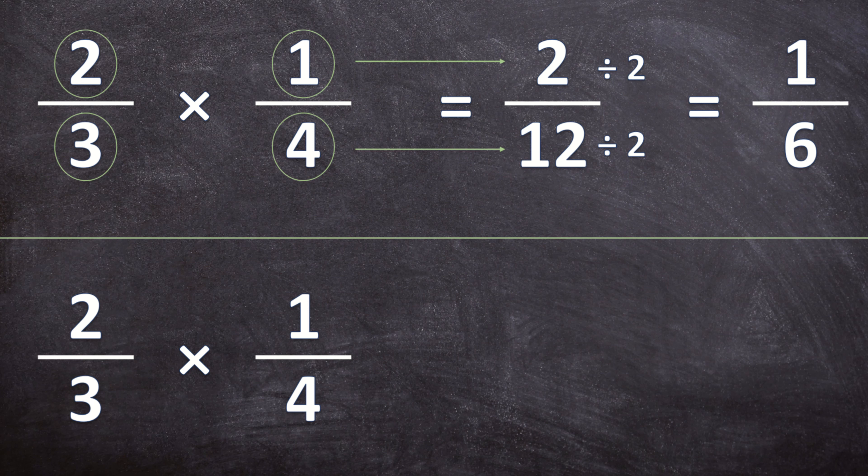When we do cross cancellation we're going to check if there's any number that can go into the 3 and the 1, any factors they both have. We cannot divide the 1 and the 3 by anything to simplify this. So now let's look at the other two numbers. Is there anything we can divide the 2 and the 4 by to make it simpler? Yes both the 2 and the 4 can be divided by 2. So I'm going to divide both of those by 2.